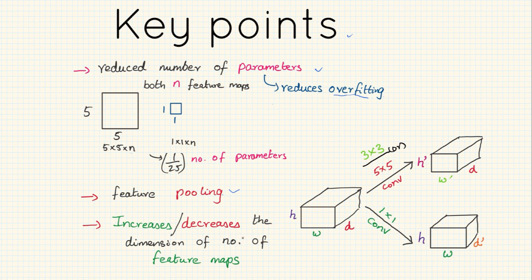And the most important aspect about 1 by 1 convolution and the reason it's widely used is it increases or decreases the dimension of the number of feature maps. It basically plays around with the dimension D.